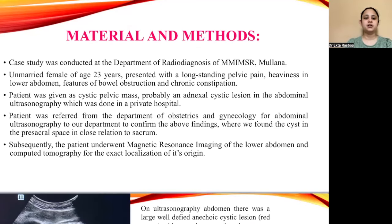In material and methods, a case study was conducted at our Department of Radiodiagnosis. An unmarried female of age 23 years presented with long-standing pelvic pain, heaviness in the lower abdomen, features of bowel obstruction, and chronic constipation. The patient was given a diagnosis of cystic pelvic mass, probably an adnexal cystic lesion, on abdominal ultrasonography done at a private hospital. She was then referred from Obstetrics and Gynecology for ultrasonography to our department, where we found a cyst in the pre-sacral space in close relation to the sacrum. Subsequently, MRI of the lower abdomen and CT for exact localization of its origin were performed.